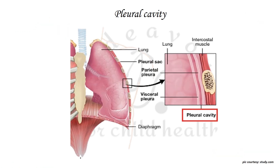The pleural cavity is a potential space between the visceral and the parietal pleura, which on the other hand is lined by the intercostal muscles and the ribcage. Empyema is a collection of pus in this space.